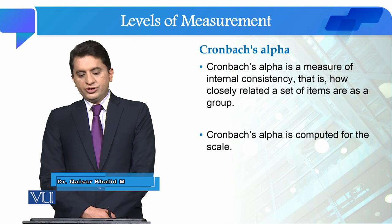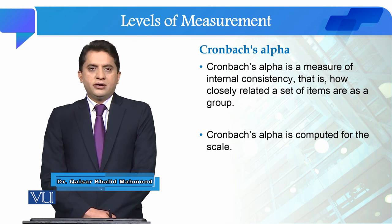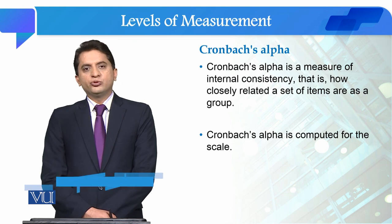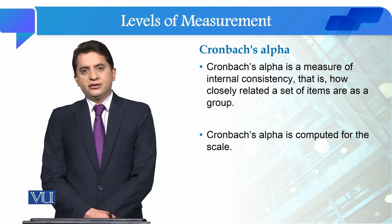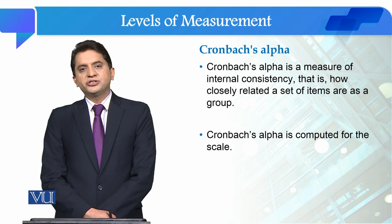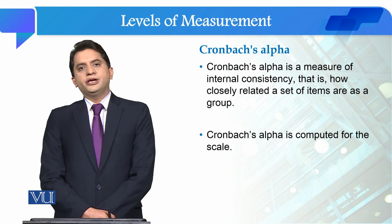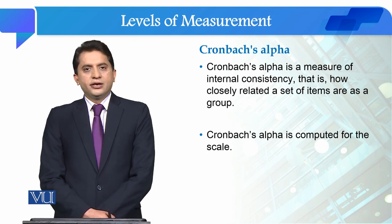Cronbach's Alpha is computed for the scale. If we have any variable in our study, then we have a scale. For example, if we have depression and anxiety, then we have a very renowned scale. It is 21 items. Cronbach's Alpha is actually a scale-level measure — it is an overall value for the scale, computed across all 21 items.